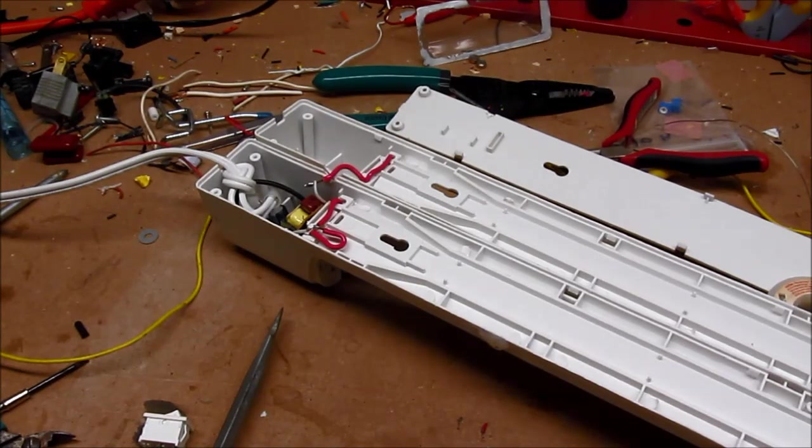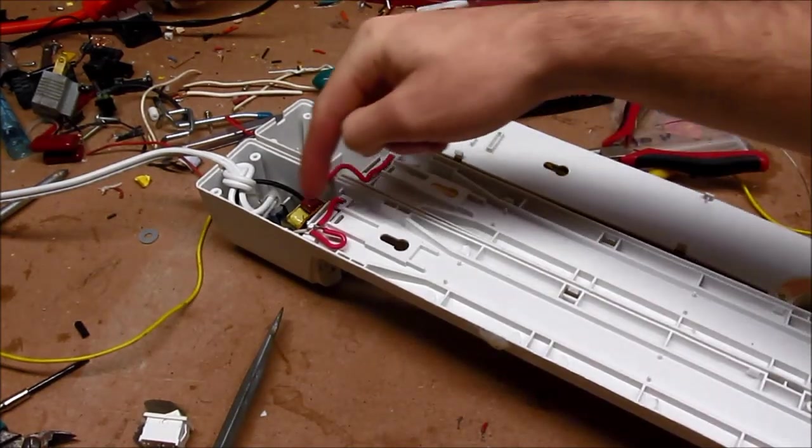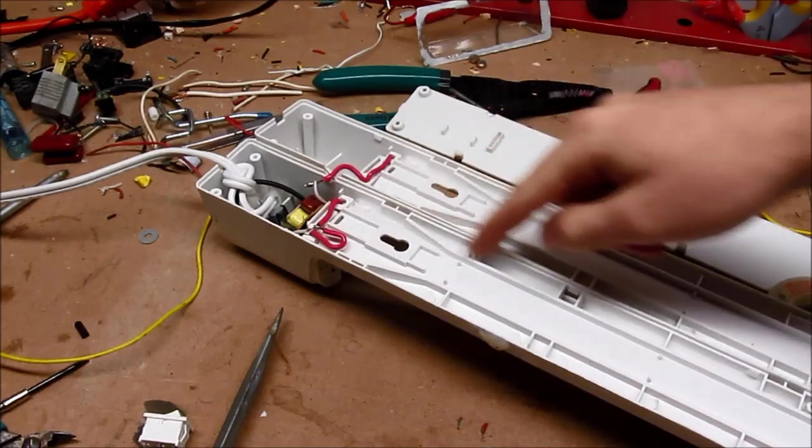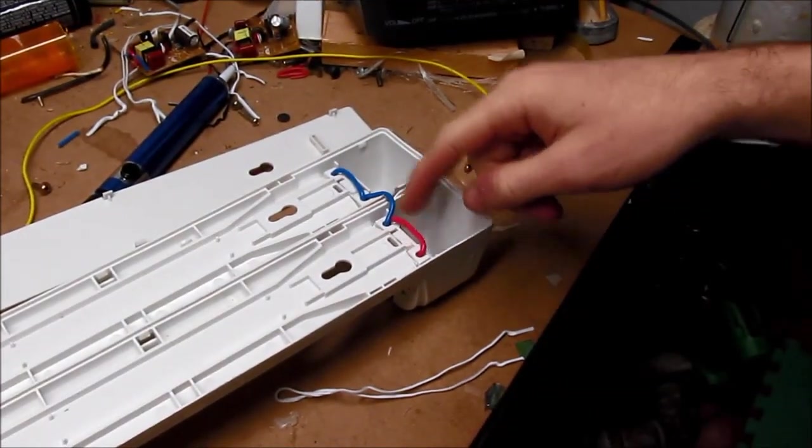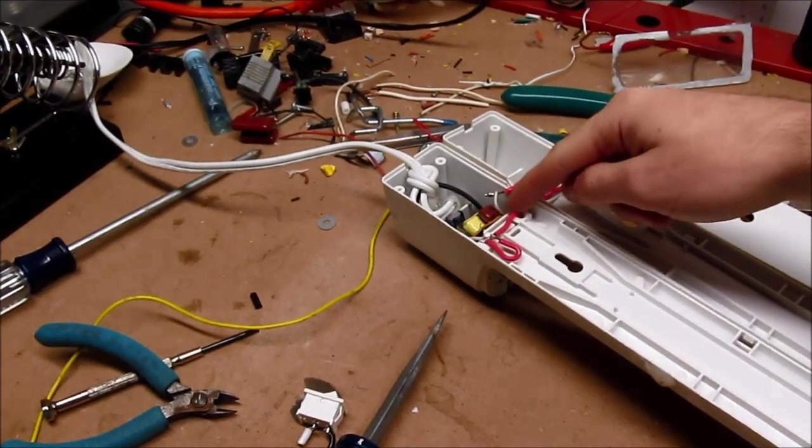Got the fluorescent hack wired up permanently, exactly the same setup as when I was testing it with just alligator leads clipped to the CFL base. Comes out one side, into the tube socket, through the tube, to the other socket, out there, across to there, into another tube, back over, and return.